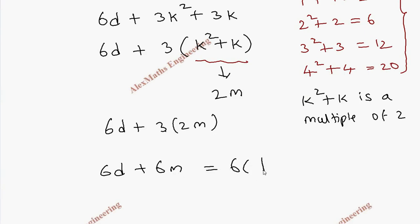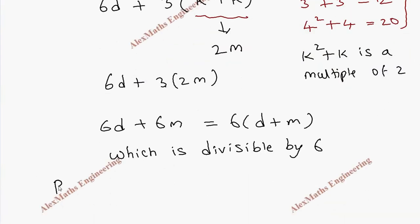So from this we can say which is divisible by 6, and hence P(k+1) is true and P(n) is true for all n belong to natural number by principle of mathematical induction.